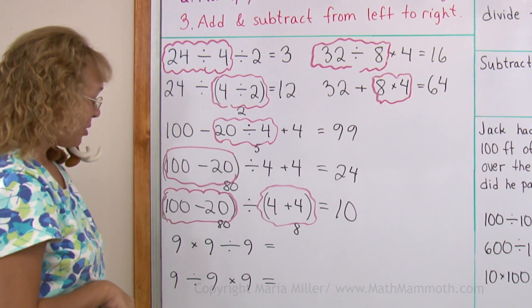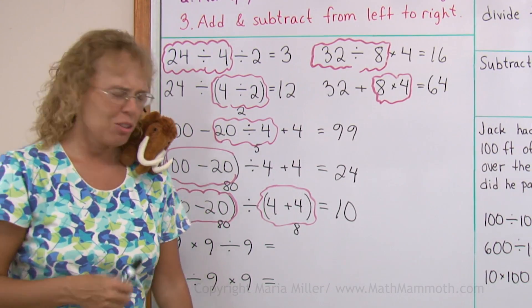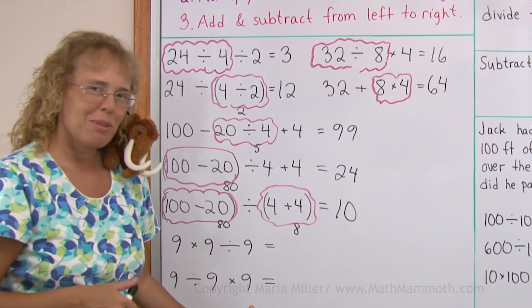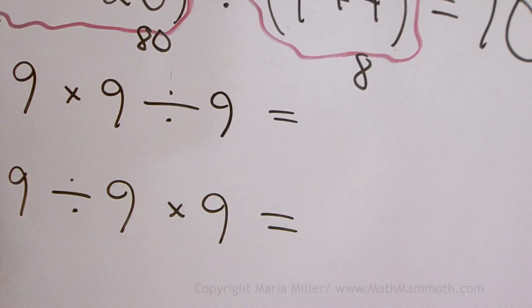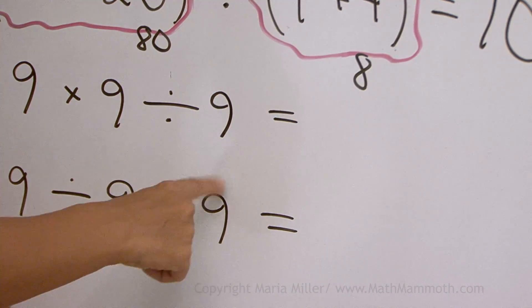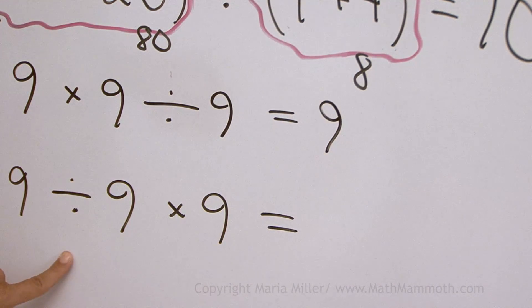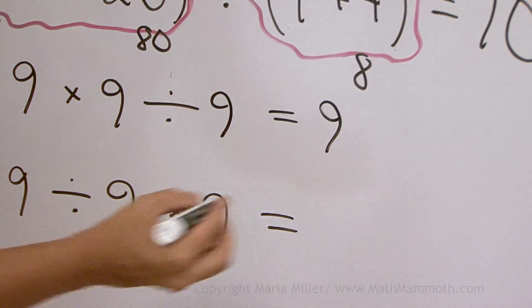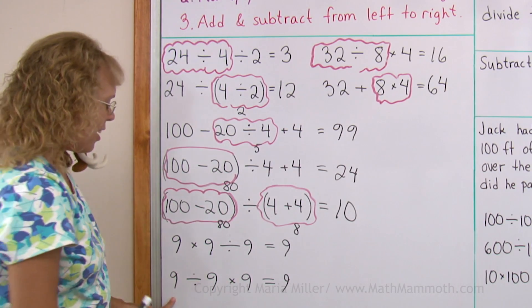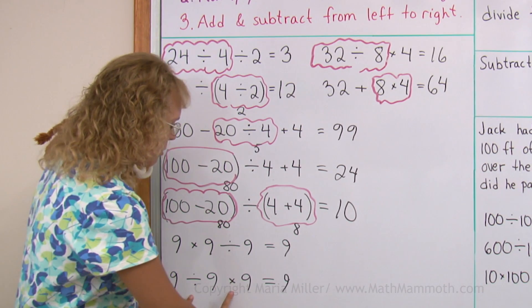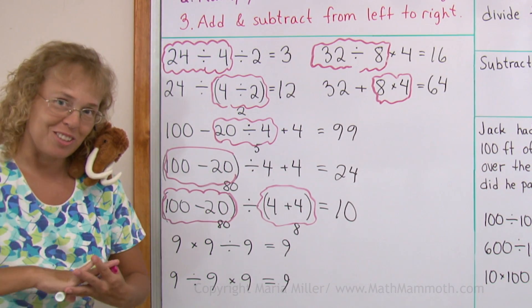Now lastly here, I have two kind of interesting calculations. Can you guess what happens? See this? Multiply by 9 and divide by 9. Divide by 9, multiply by 9. Can you guess what happens? 9 times 9 would be 81. Divided by 9 equals 9. Now here, you need to divide first. 9 divided by 9, 1 times 9, 9. It's like we got nowhere. We start with 9, end with 9. And why is that? It's because division and multiplication are opposite operations.